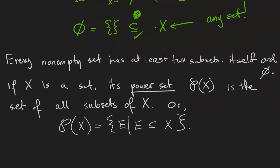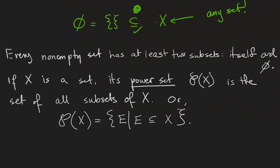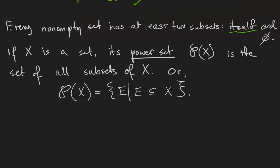So that means that any non-empty set is going to have at least two subsets: itself and the empty set. Itself, because any element of X is also an element of X. And so we can define a new set based on a set X and its subsets.